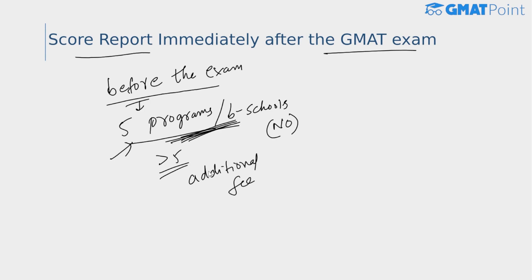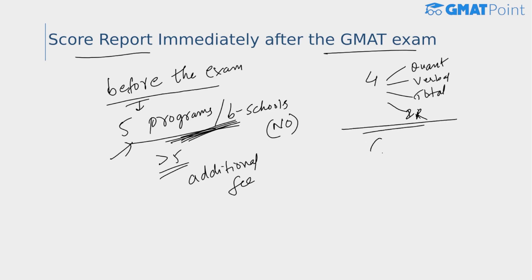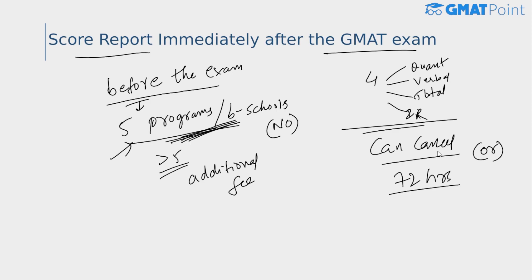After you complete your test, you will receive four of the five scores — quant, verbal, total, and IR. Once you receive your scores on exam day, you can cancel them after previewing. You can cancel immediately at no charge, or cancel within 72 hours of your test for a fee. Cancellation takes effect if done in person at the test center immediately, or within 72 hours afterward for a $25 fee.